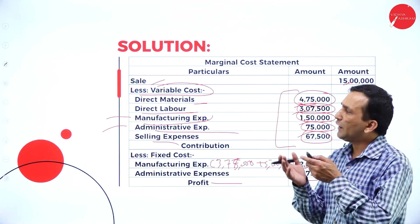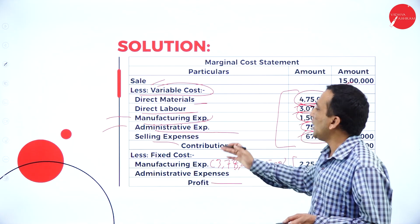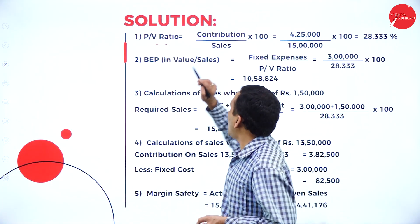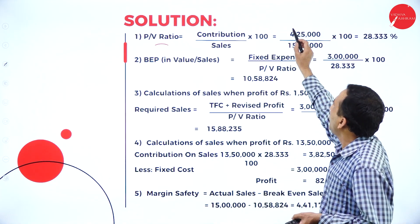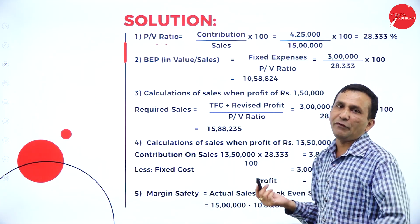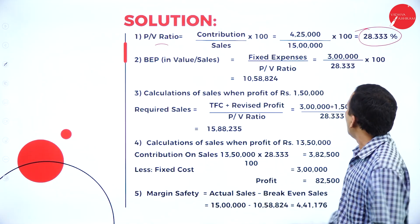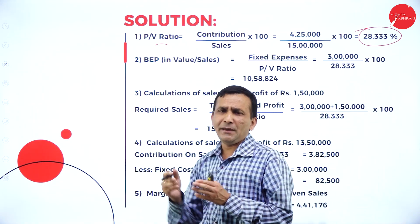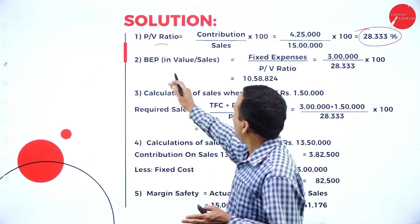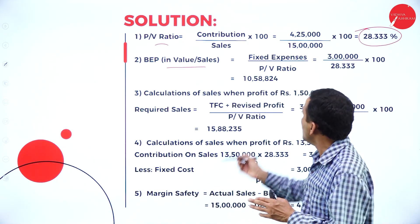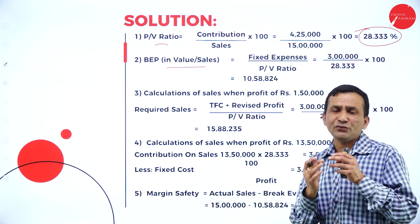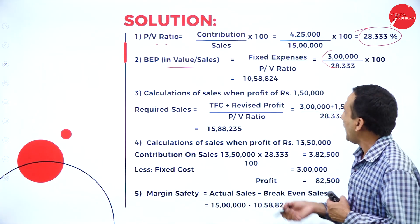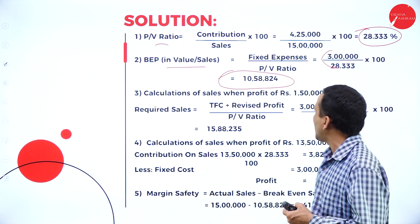The profit is not directly used in the formulas — everything depends on contribution. For PV ratio, the formula is contribution divided by sales into 100: 4 lakh 25,000 divided by 15 lakhs into 100, giving 28.33%. For BEP in sales value, the formula is fixed expense divided by PV ratio: 3 lakh divided by 28.33 into 100, giving BEP in sales of 10 lakh 58,824.